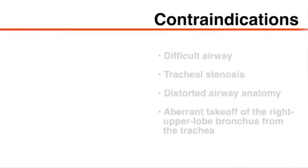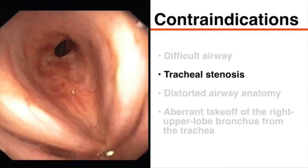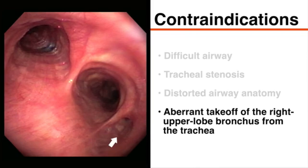Contraindications to double lumen endotracheal tube placement include a difficult airway, tracheal stenosis, and distorted airway anatomy, any of which can impede or prevent correct positioning of the tube. Additionally, aberrant takeoff of the right upper lobe bronchus from the trachea is a relative contraindication for right-sided double lumen tube placement.